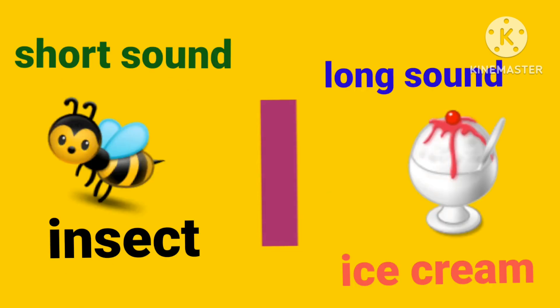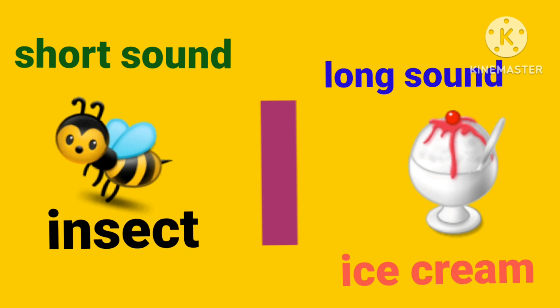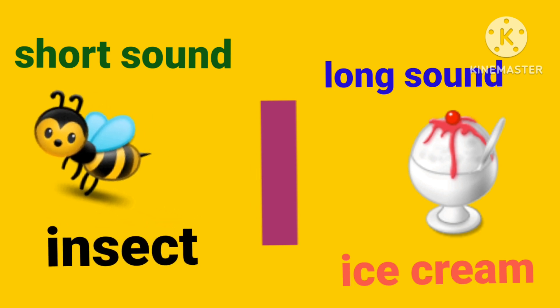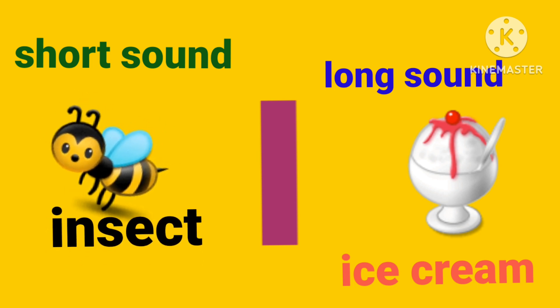Letter I — letter I is a vowel and it has two sounds: short sound and long sound. Short sound: 'ih, ih' as in eagle.